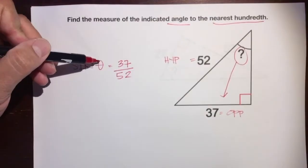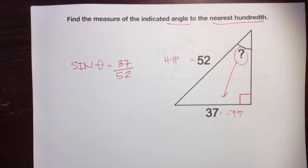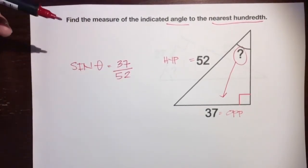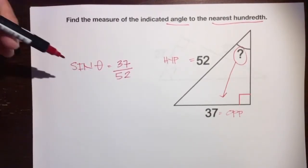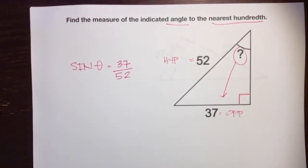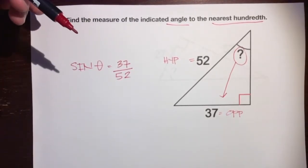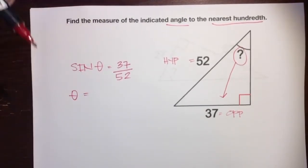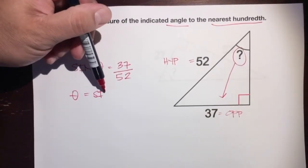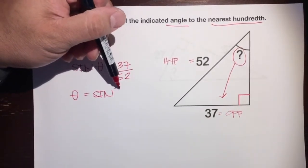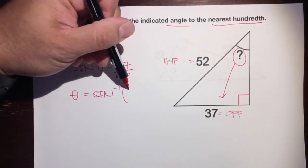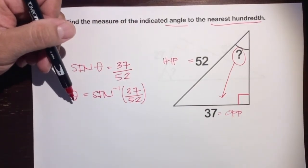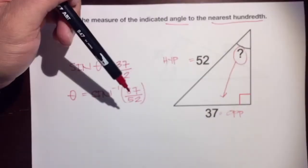We're trying to find this missing angle, and we set up sine because we have opposite and hypotenuse. But we want to get theta by itself. We can't just divide sine on both sides — this is the sine of theta, not sine times theta. So to get theta by itself, we use the inverse sine. We rewrite it as: theta equals the inverse sine (sine to the negative one) of 37 over 52.